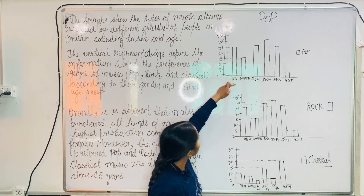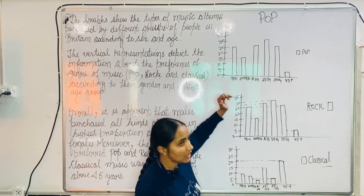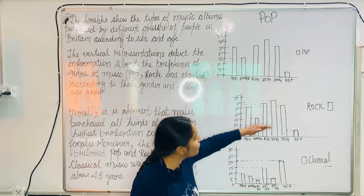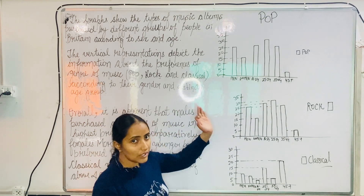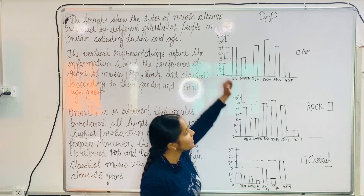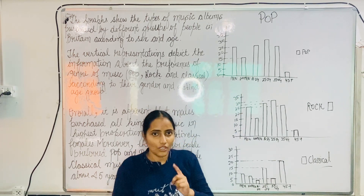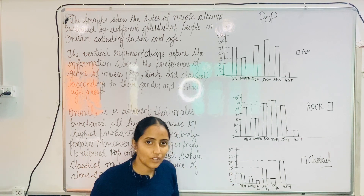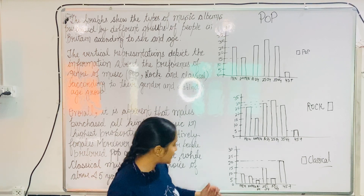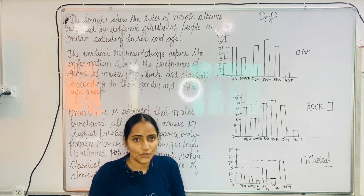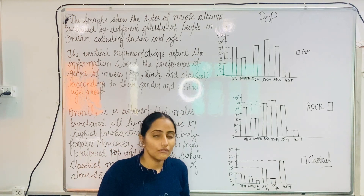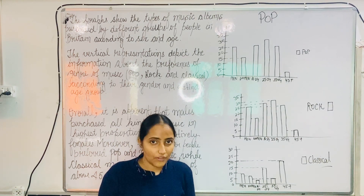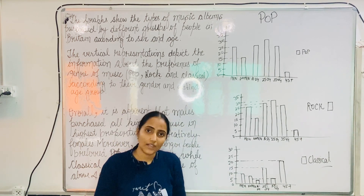Now for the gender section: looking into the details, it is clear that the figures for men and women for rock and pop music were similar — that were 25 percent and 15 percent for men and women respectively. The second point is that the percentage for men and women was less than 10 for classical music, meaning less than 10 percent of both males and females were interested in purchasing classical music albums.